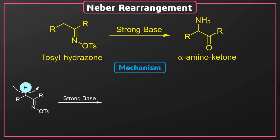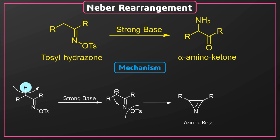In the presence of a strong base, one acidic alpha hydrogen atom is removed and a carbanion is formed. This carbanion acts as a nucleophile and attacks the nitrogen, eliminating the tosyl group from the molecule. As a result, an azirine ring is formed.